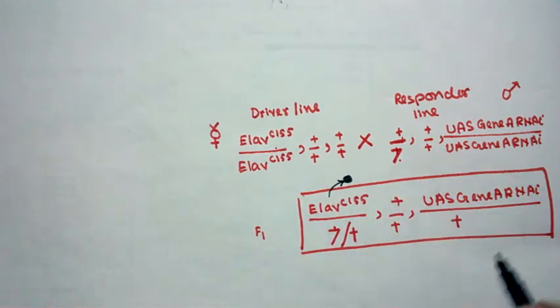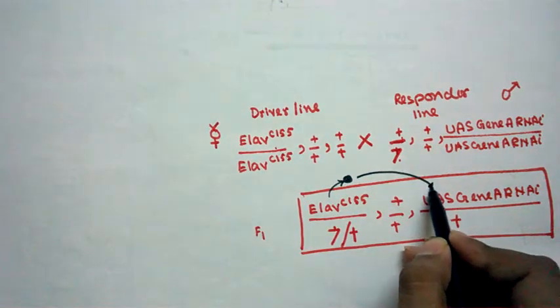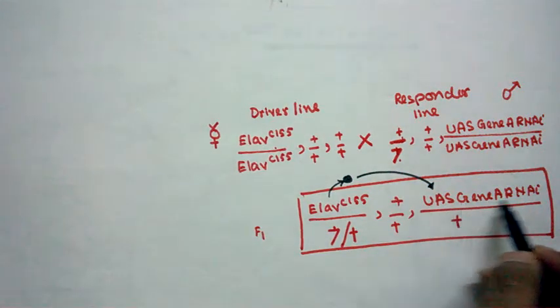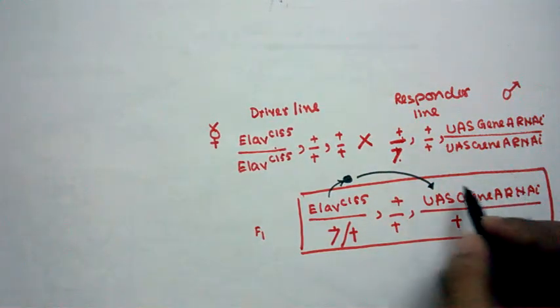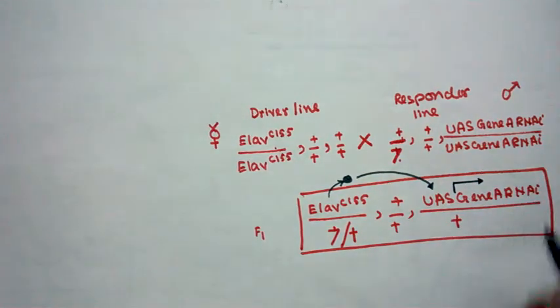And this GAL4 transcription factor is able to bind to the upstream activation sequence, UAS, of this particular RNAi construct. And after binding that, it can express this particular RNAi construct.